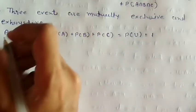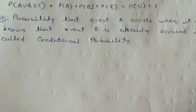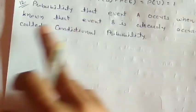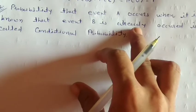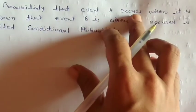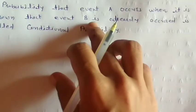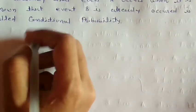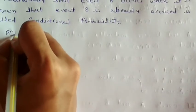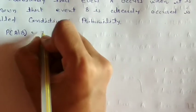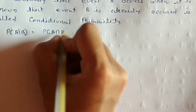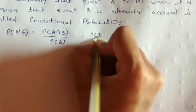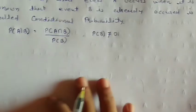Number 12: Conditional probability. The probability that event A occurs when it is known that event B has already occurred is called conditional probability. Its formula is: P(A/B) = P(A∩B) / P(B), where P(B) ≠ 0.